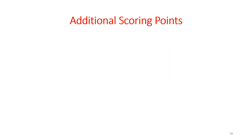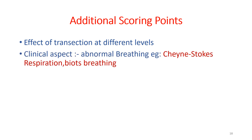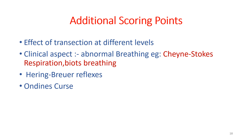For additional scoring points, you can write about the effect of transection at different levels, as that experiment clearly showed the function of each area. You can also write the clinical aspects of abnormal breathing such as Cheyne-Stokes breathing, Biot's breathing, and Kussmaul breathing. Additionally, write about the Hering-Breuer reflexes and Ondine's curse — a condition in which only voluntary control of respiration is possible and involuntary control is not, meaning the subject cannot sleep. These additional points can be added depending on the marks or weightage.